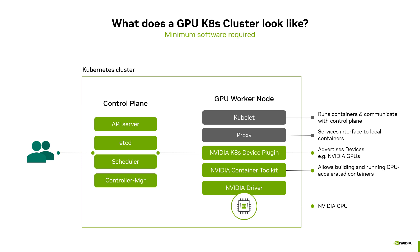In order to understand the value of the GPU Operator, let's do a quick primer on what a Kubernetes cluster looks like with GPUs. We start with the control plane of the cluster on the left. This includes components such as the API server and etcd that maintain the state of the cluster. The control plane is how users interact with the cluster, for example using the kubectl command, and does not typically run jobs, though it could be designed that way using taints. The control plane can also be replicated for high availability.